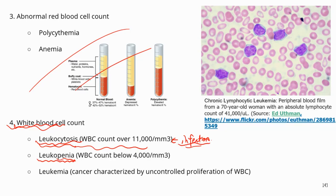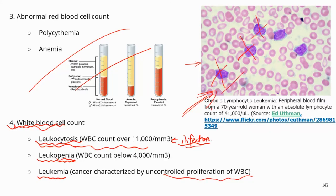Sometimes drugs can cause leukopenia — for example, some anti-cancer drugs can decrease the level of white blood cells. The last condition is leukemia, which is essentially blood cancer, characterized by uncontrolled proliferation of white blood cells. It has abnormally high levels of white blood cells, which disrupts the functions of other blood cells. The diagram shows a field under the microscope with far too many lymphocytes — this is chronic lymphocytic leukemia, caused by uncontrolled proliferation of lymphocytes, one of the five leukocyte groups.